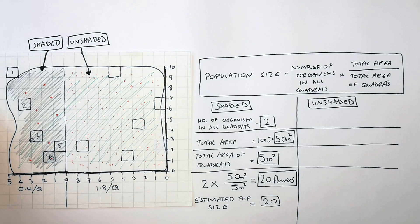To calculate your estimated population size, you can also simply multiply your mean per quadrat by the total area. So it'll be 0.4 times 50, which also gives you an estimated population size of 20 flowers.